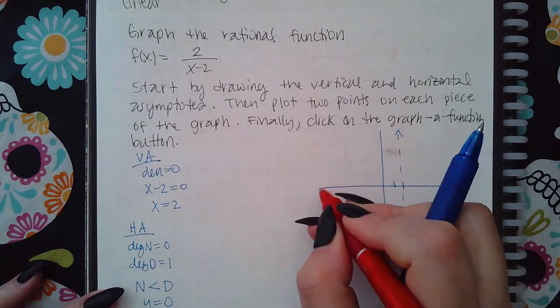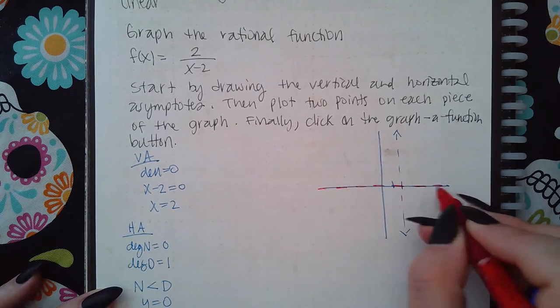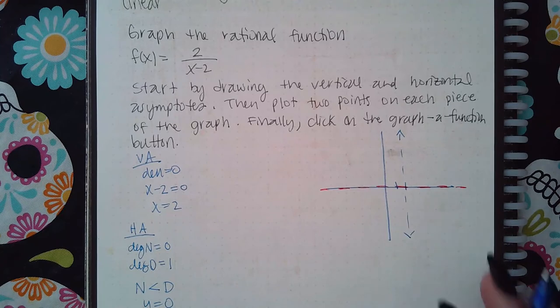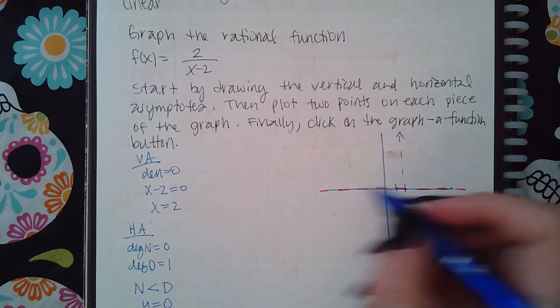Which means I will have a horizontal asymptote here. Click on the horizontal dotted line and then make sure you put it on top of the x-axis.